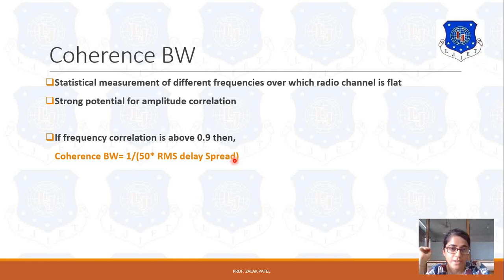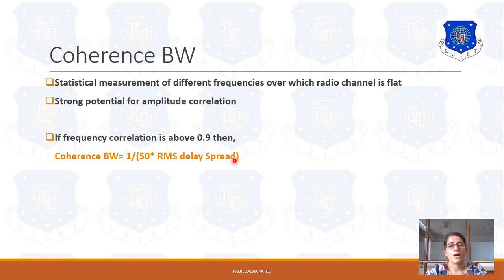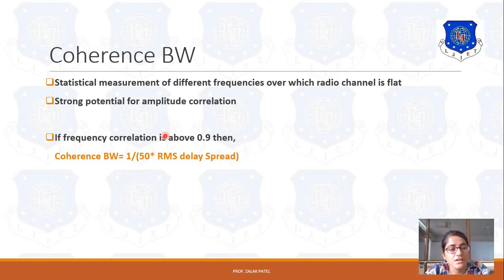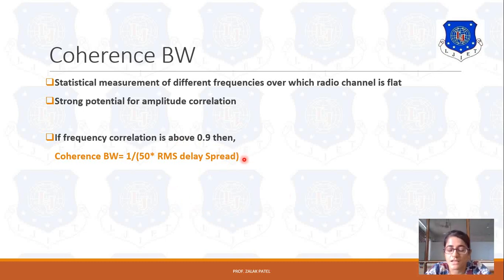This RMS delay spread was discussed in the last lecture. RMS delay spread is denoted by sigma and it is given by the square root of tau-squared-bar minus tau-bar-squared. So, coherence bandwidth is equal to 1 upon 50 into RMS delay spread, when the frequency correlation of the signal is 90%, meaning if two signals are 90% correlated, then coherence bandwidth is given by 1 upon 50 into RMS delay spread.